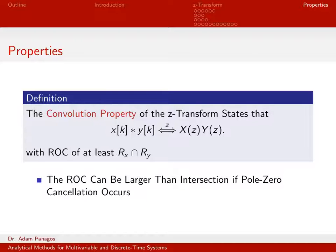This chart right here states the convolution property. The convolution property is a very useful one. This is one of the big reasons why we like the z-transform. It says that if we have the convolution of x of k and y of k in the time domain, in the z-domain that is simply multiplication of their respective z-transforms. So that's one reason we really like transform domain methods. We don't have to do convolution.